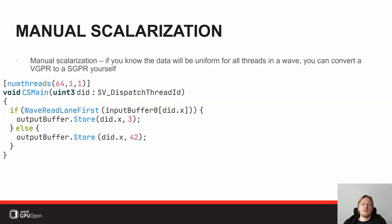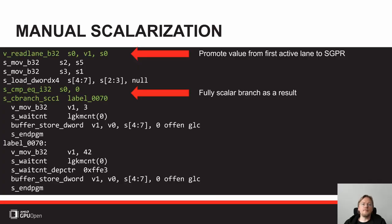You can also scalarize manually when you know something is dynamically uniform — you know you're reading something that will be the same for all values in your vector, even when loading with a vector index. In this case you can manually scalarize using WaveReadFirstLane, telling the compiler the first value in the wave is uniform and can be promoted. You can see the value gets promoted to a scalar register, the compiler issues a scalar branch, doesn't do all the vector magic anymore, and you get the behavior you want.